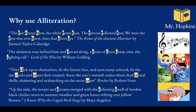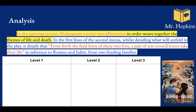So those are reasons why we might use alliteration — but how do we analyse it? This example is from the opening sonnet of Romeo and Juliet, which basically tells the audience exactly what is going to happen — it's a big spoiler. Shakespeare uses alliteration in the second stanza to weave together the themes of life and death. The lines are: 'From forth the fatal loins of these two foes, a pair of star-crossed lovers take their life.' Big spoiler alert — but that's the point of the opening sonnet.